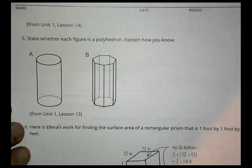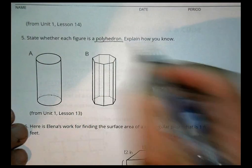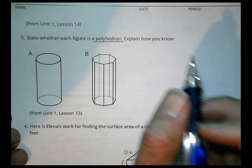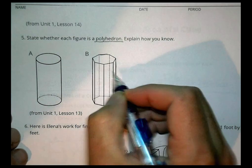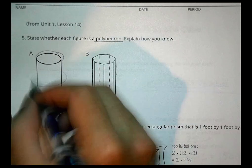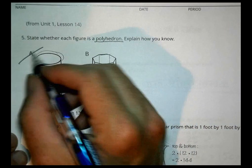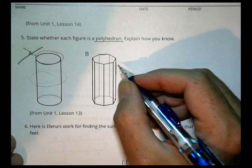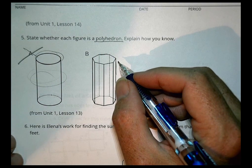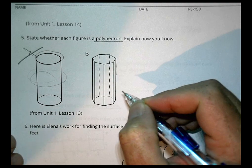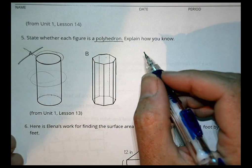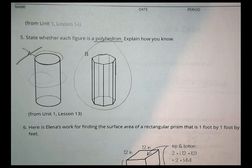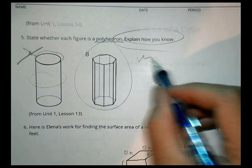Number 5: state whether each figure is a polyhedron and explain how you know. A polyhedron requires straight lines and flat faces composed of polygons. One figure has curved shapes, so it is not a polyhedron. The other figure is a polyhedron because it has straight sides, is composed of polygons, and all the sides come together at vertices.